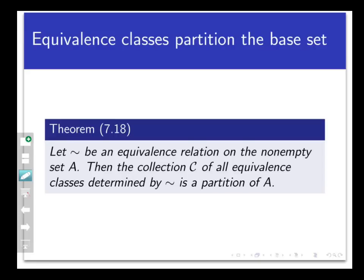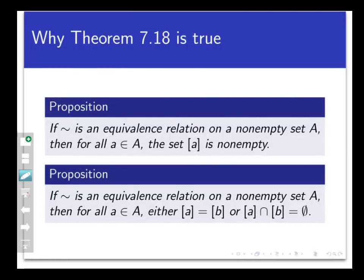Let tilde be an equivalence relation on any non-empty set A. Then the collection script C of all equivalence classes determined by tilde is a partition of A. That is, every equivalence relation determines a partition of the set of objects that are being declared equivalent. And the subsets in the partition are the equivalence classes.